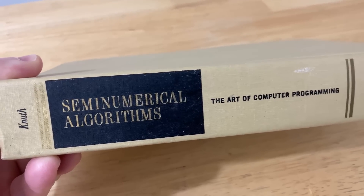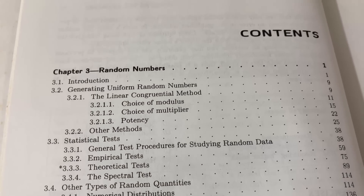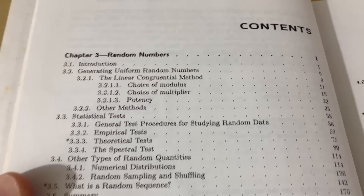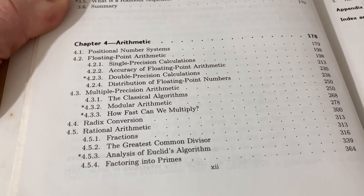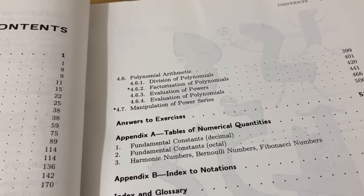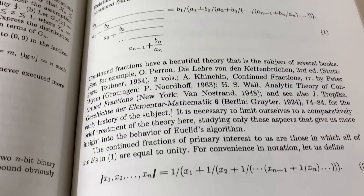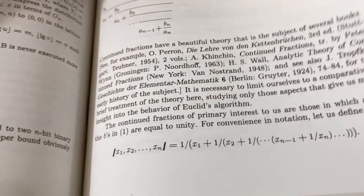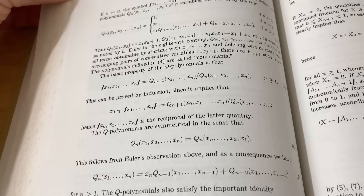The second volume in The Art of Computer Programming is called Semi-Numerical Algorithms, and again this is the second edition by Newth. The contents start with chapter three, since the first book covers chapters one and two. It starts with random numbers, then arithmetic — floating point arithmetic, multiple precision arithmetic, rational arithmetic, polynomial arithmetic — and of course answers to the exercises. There is a lot of math in this book; for instance, he discusses the analysis of Euclid's algorithm and defines notation for continued fractions.